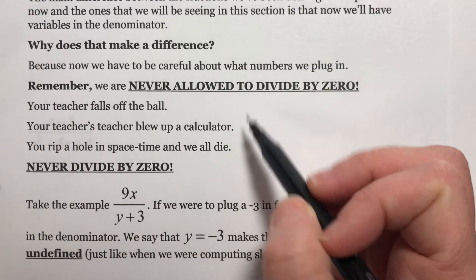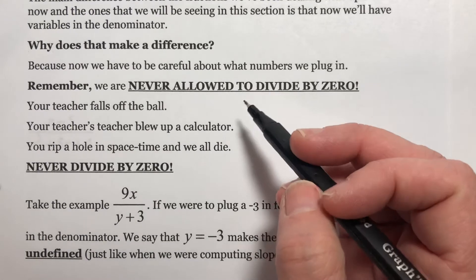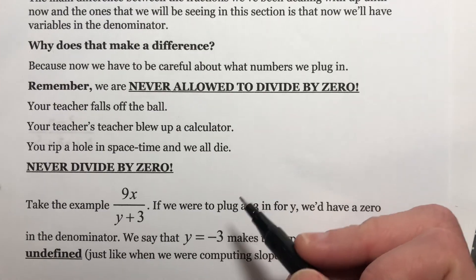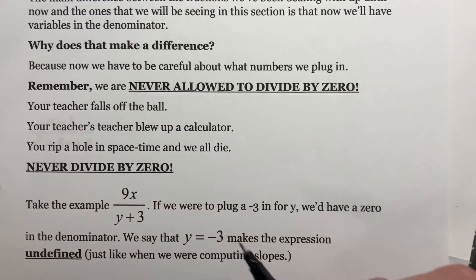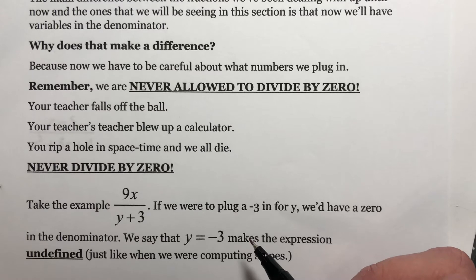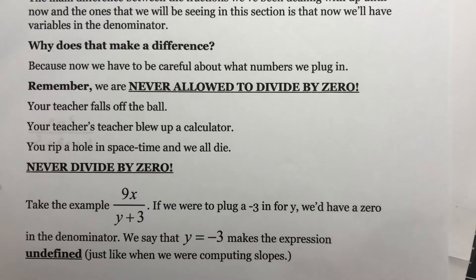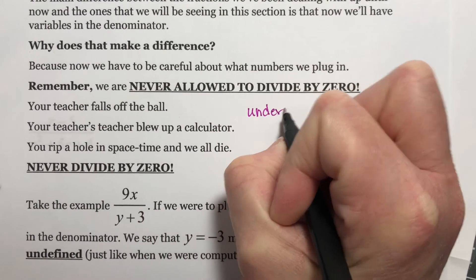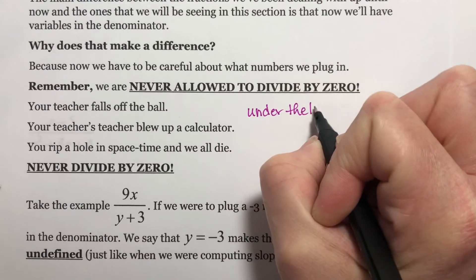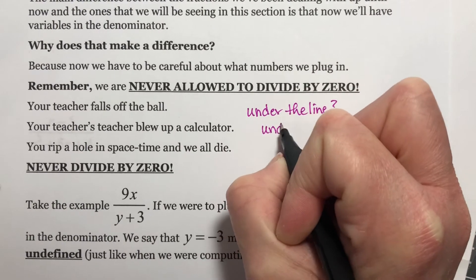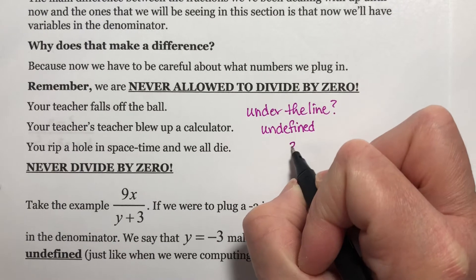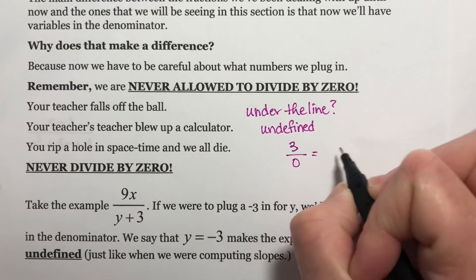We talked about a whole bunch of different ways to remember we're not allowed to divide by zero. I fall off a ball if I try to stand on top of it — the zero on the bottom looks like a ball. My teacher's teacher blew up a calculator by accidentally dividing by zero on one of the very first calculators. You rip a hole in space-time and we all die. And the other one I've heard recently is: if the zero is under the line, it's undefined.